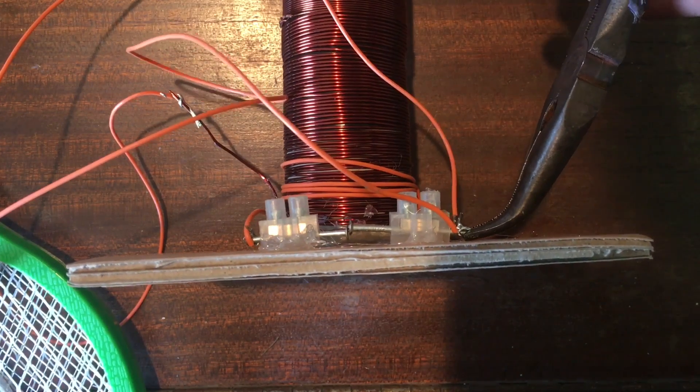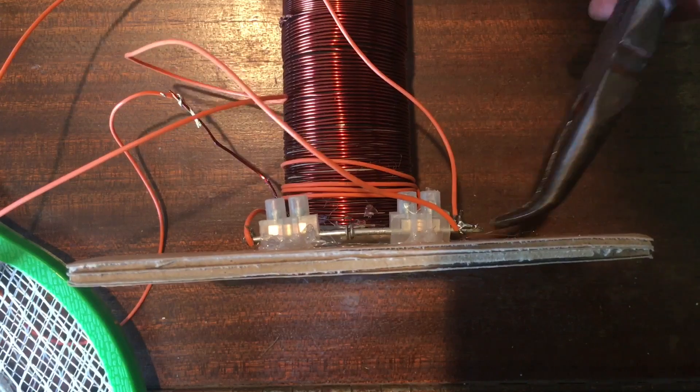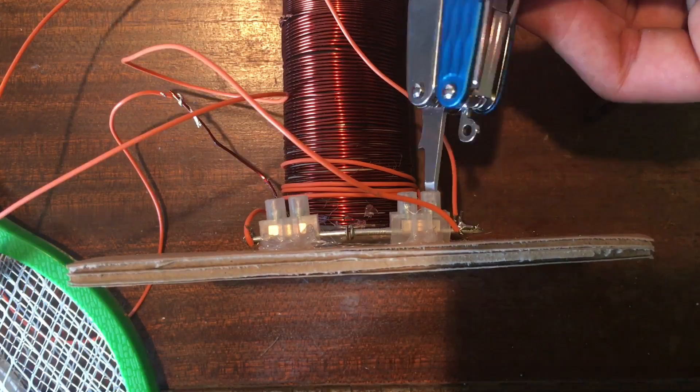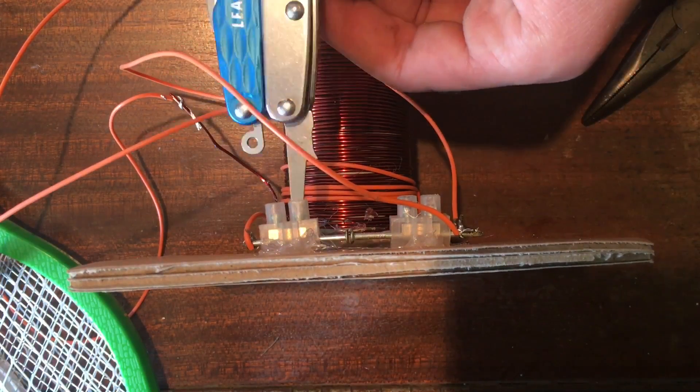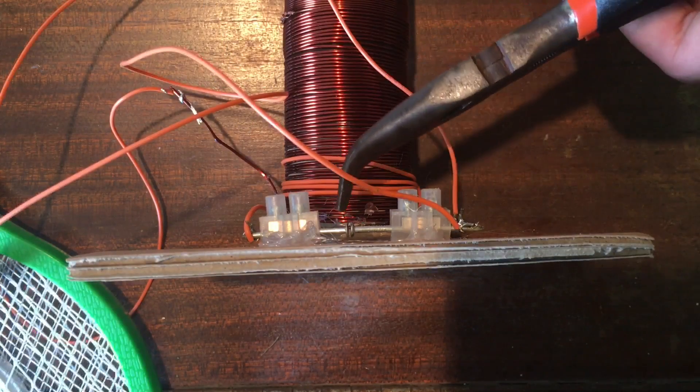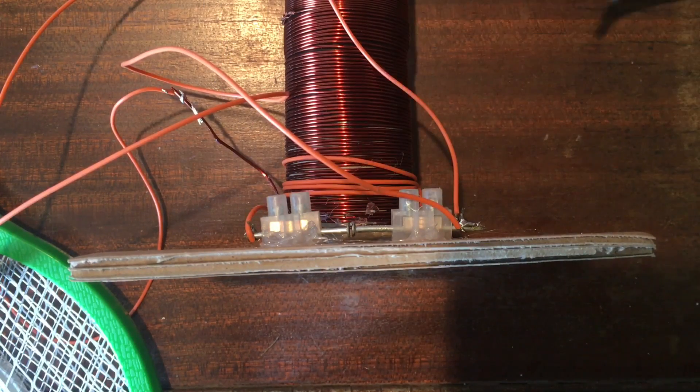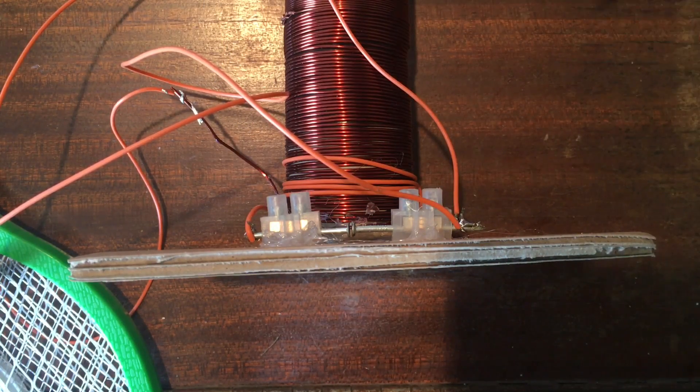Next, adjust the distance between the spark gap with a pair of pliers so you don't get shocked. When you've got it to the place it needs to be, tighten up the circuit blocks. When you're finished, discharge it with a pair of pliers so you don't get shocked afterwards.